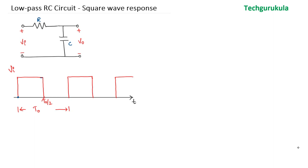Here is the low-pass RC circuit and its input square wave. We are going to see how this circuit responds to this input and produces output. The reference point is t = 0, the time period is T0 for the square waveform, the midpoint is T0/2, and the peak value of the input is Vm. At t = 0, a voltage of Vm is suddenly applied across this RC circuit.